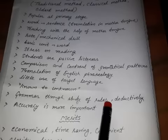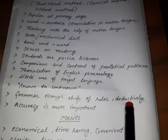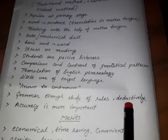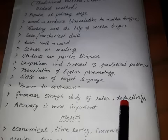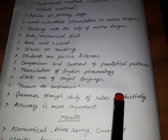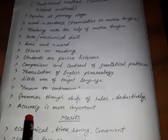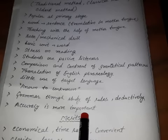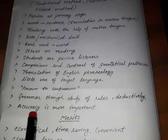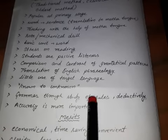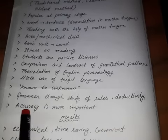Grammar is taught through study of rules deductively — grammar is only taught to the extent that you can use it in translation, not for daily life use; it is explained only through rules. Accuracy is most important in this method — whether you have done your homework correctly matters most. Expressing thoughts and learning to use the language are not important here — only accuracy matters.